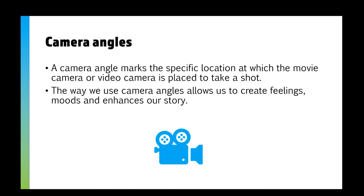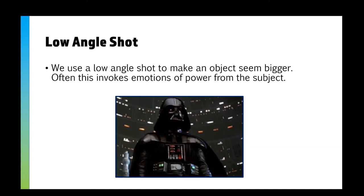Then we've got our actual camera angles. We can use certain camera angles to create feelings and moods and further enhance our story. We could use a low angle shot — the idea is to make an object seem bigger, greater, or more powerful. We've got this picture of Darth Vader from below, which makes him look taller, more imposing, and a little scarier. You might also take a low angle shot of a building to make it look even taller or to make the audience feel really small.